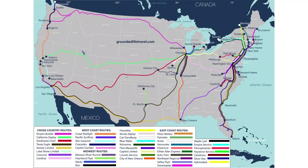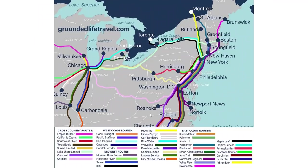A tip for putting a trip like that together: there are really only two trains that run north-south west of Chicago — the City of New Orleans and the Coast Starlight. You can connect any of the cross-country routes with one of these north-south routes to make a big square or triangle that gets you back to where you started.